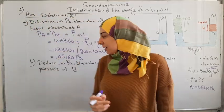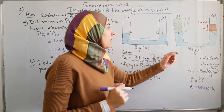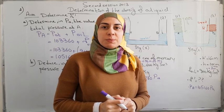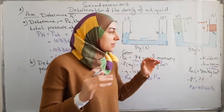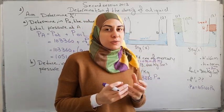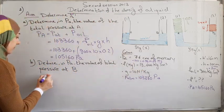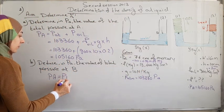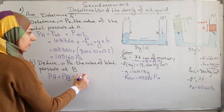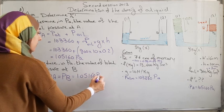Now we deduce in Pascal the total pressure at B. The pressure at A and the pressure at B are equal because they are at the same horizontal level and in the same liquid, which is water at rest. So we already found the pressure at B — it equals the pressure at A.